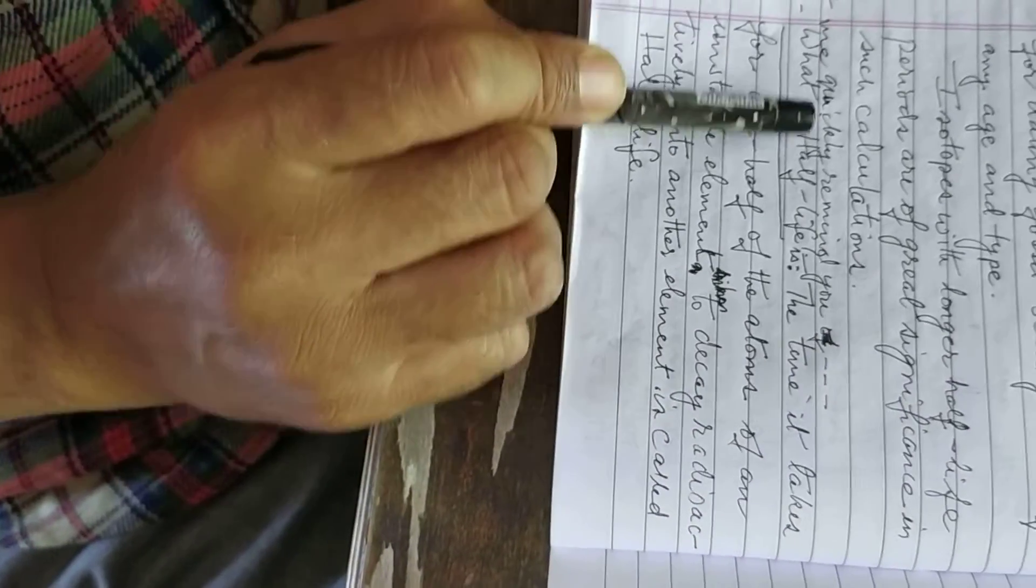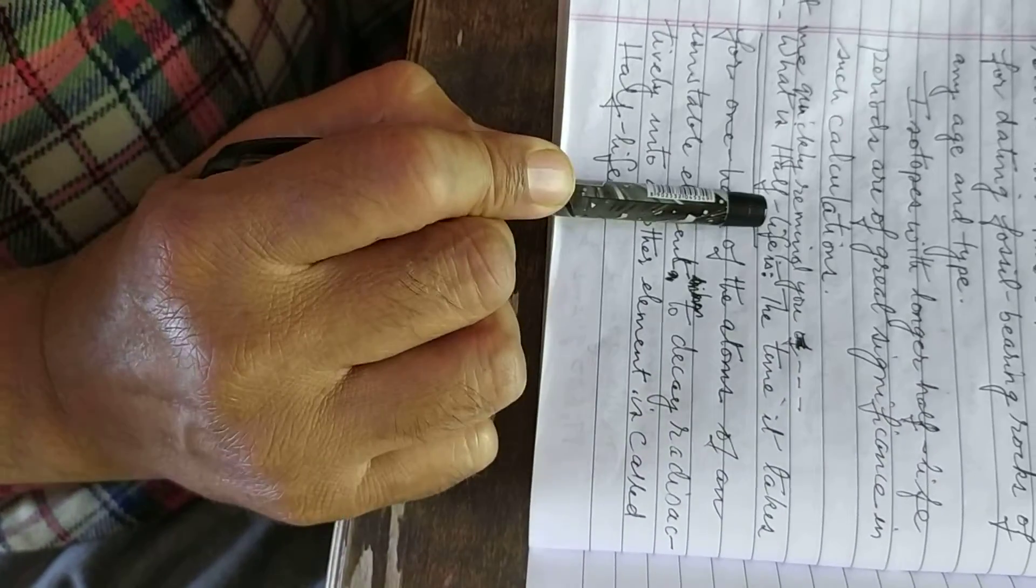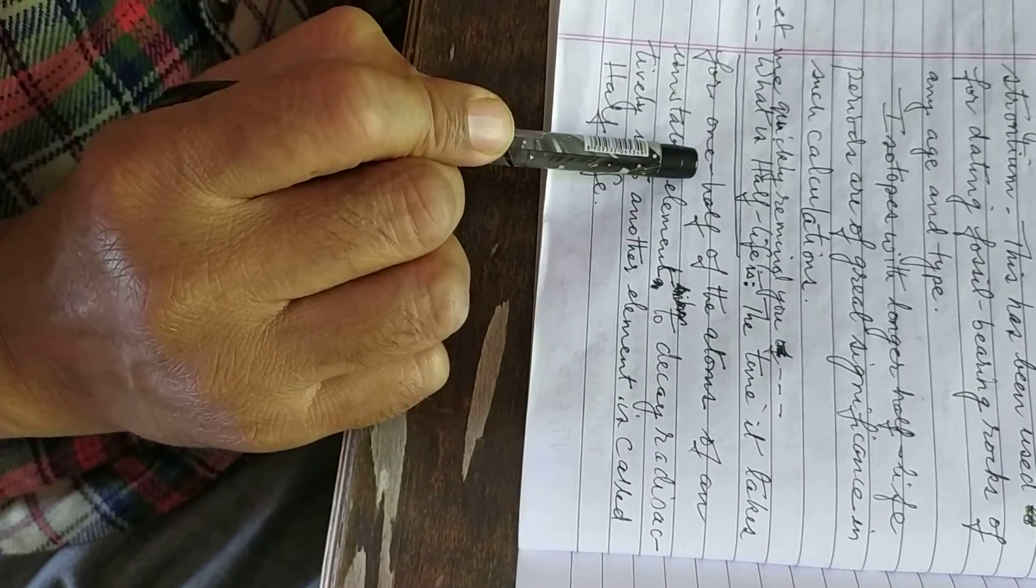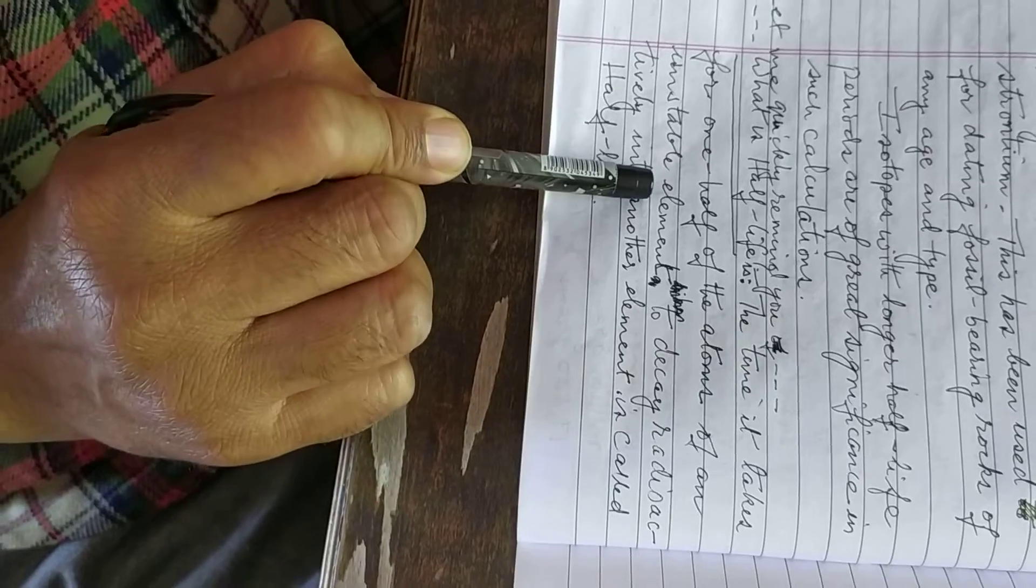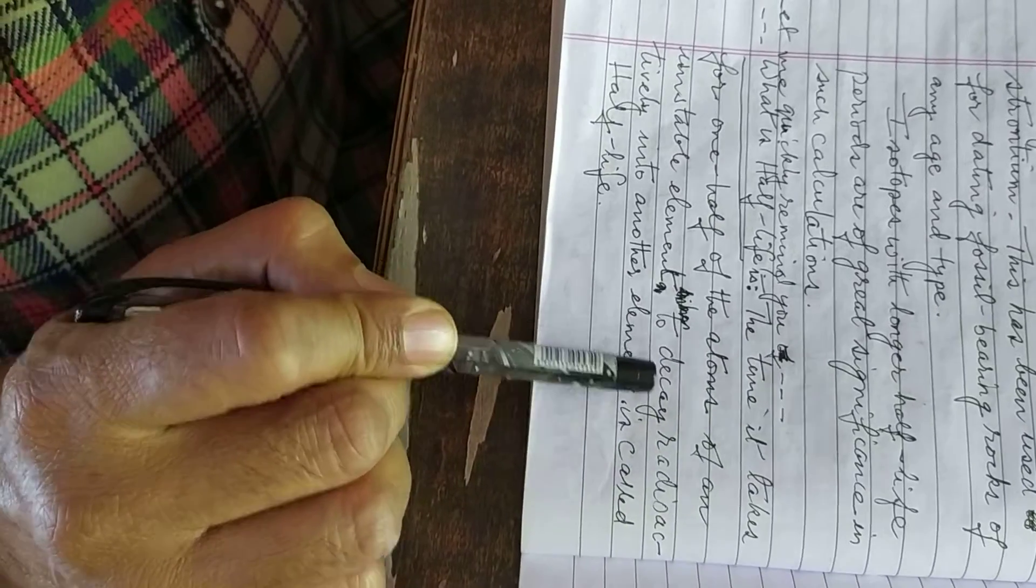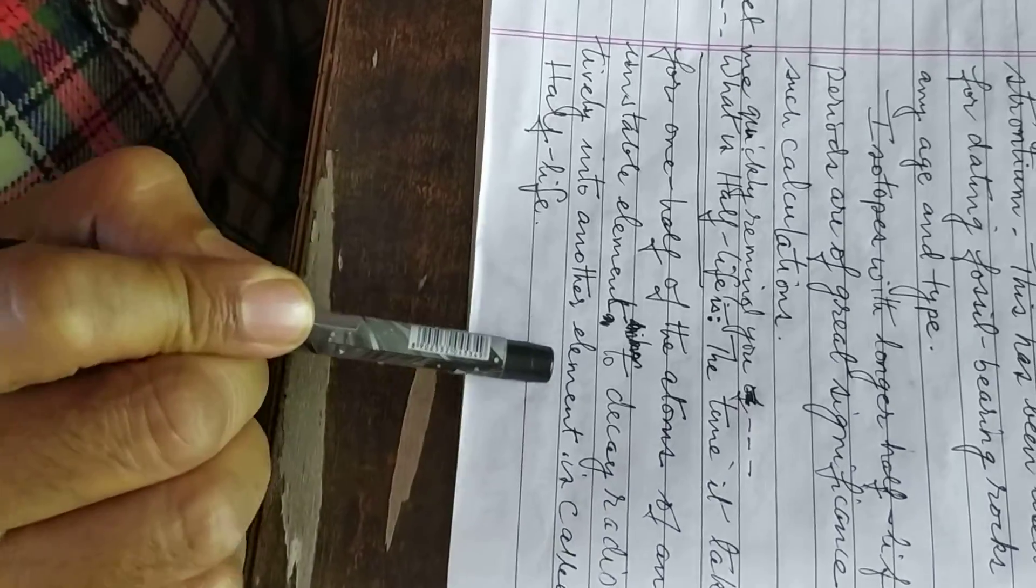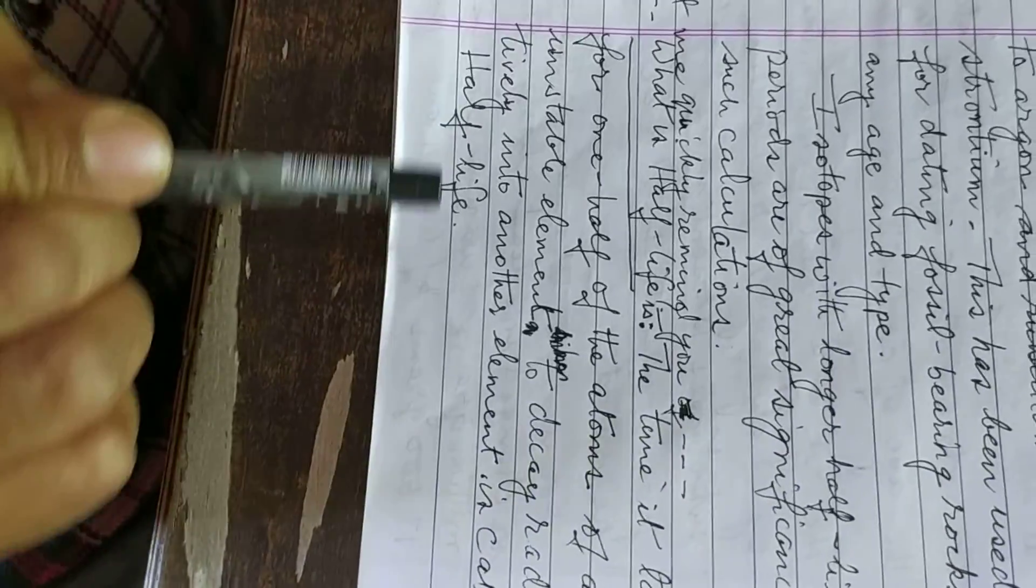Let me quickly remind you of what half-life is. The time it takes for one half of the atoms of an unstable element to decay radioactively into another element is called half-life.